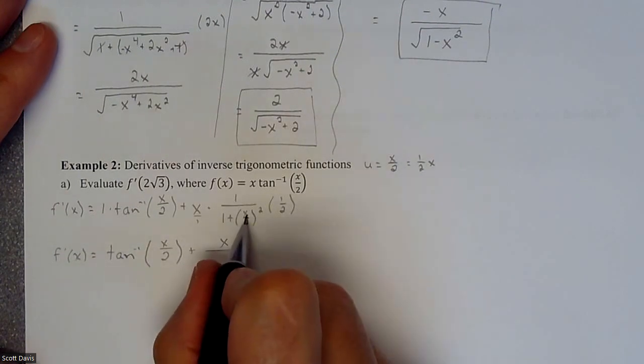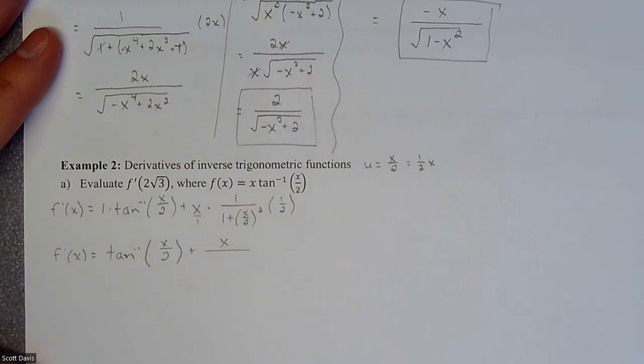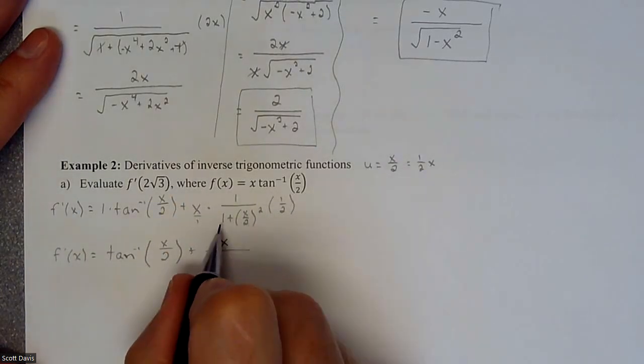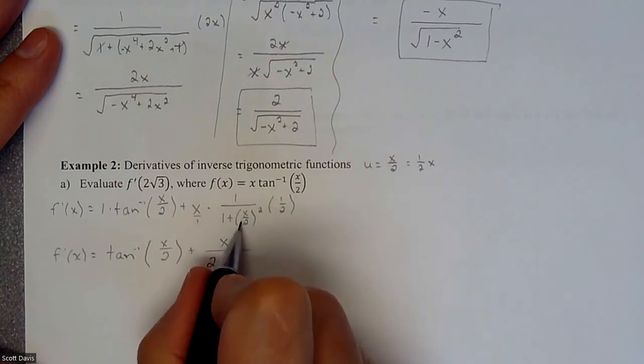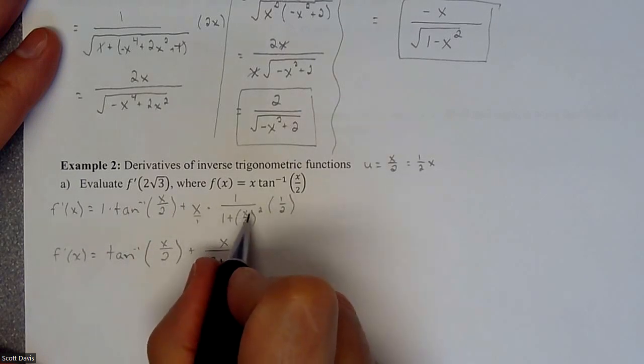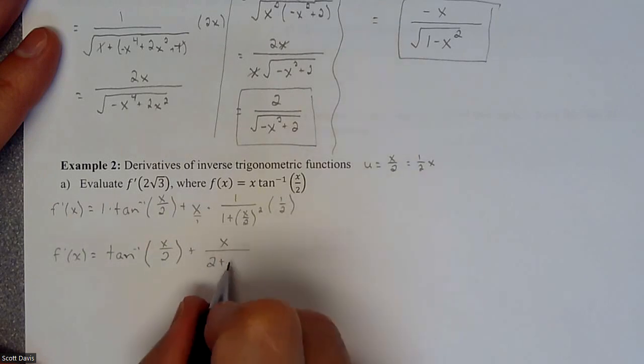And then here, you're going to have an x squared over four. But we have a two that's going to distribute to both of them. So that'll be a two, this is an x squared over four, times it by two, it's going to be an x squared over two. Because we'll simplify that.